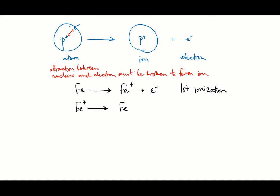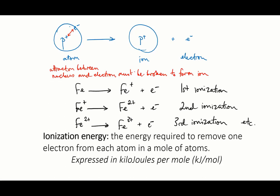As you remove successive electrons, you also have the second ionization and the third ionization and so on, until you run out of electrons. The ionization energy is defined as the amount of energy needed to ionize a mole of atoms. So it's expressed in kilojoules per mole, and different elements have different ionization energies.